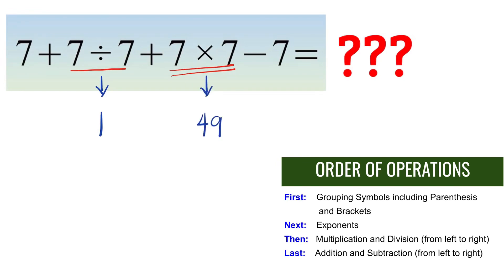Now, we will rewrite the expression with the other numbers. So, we have 7 plus 1 plus 49 minus 7.